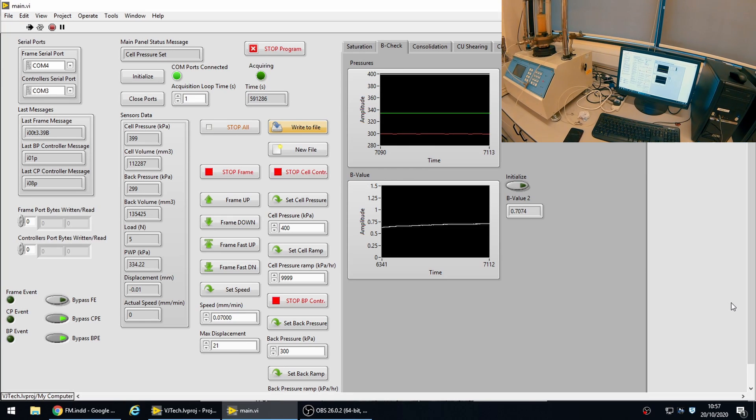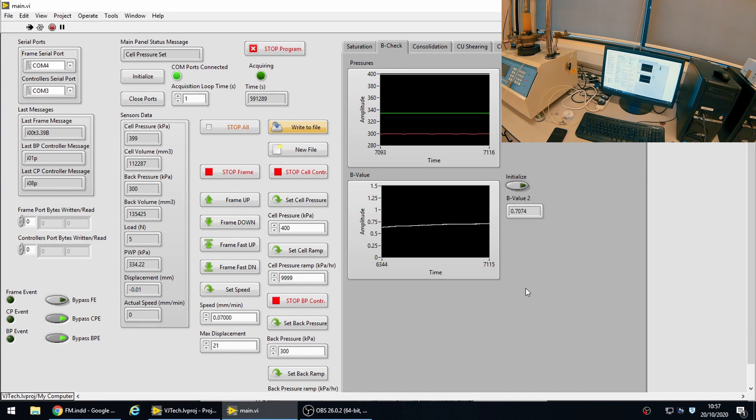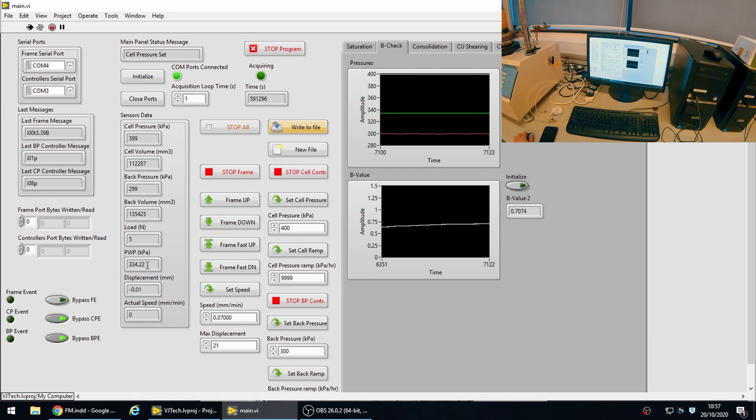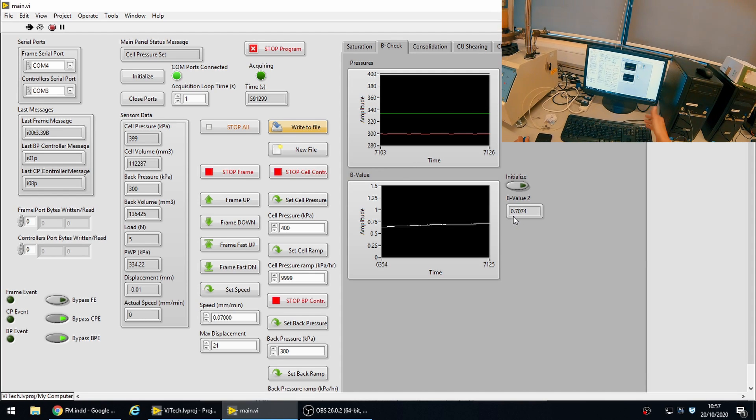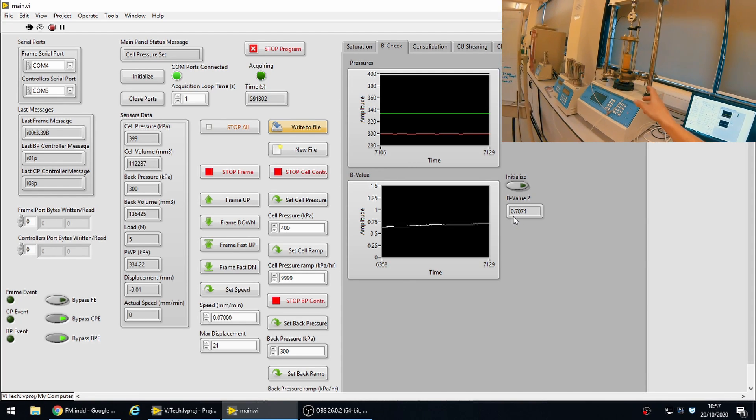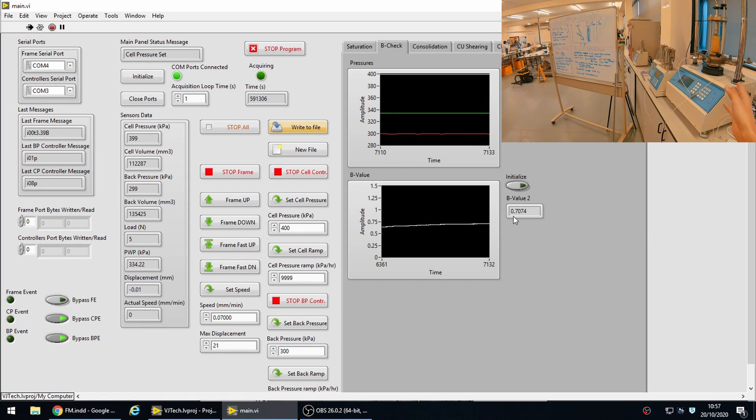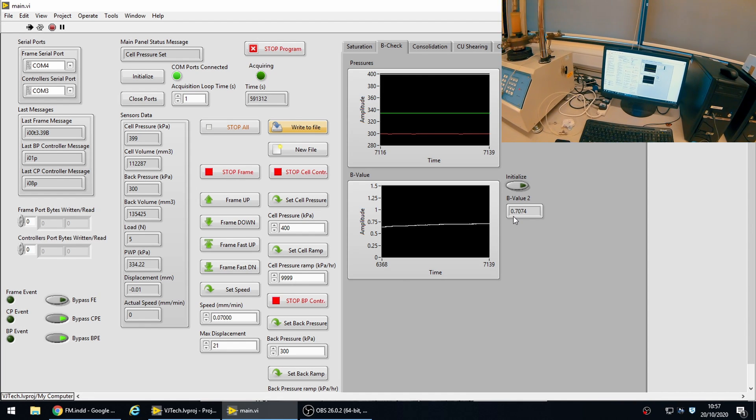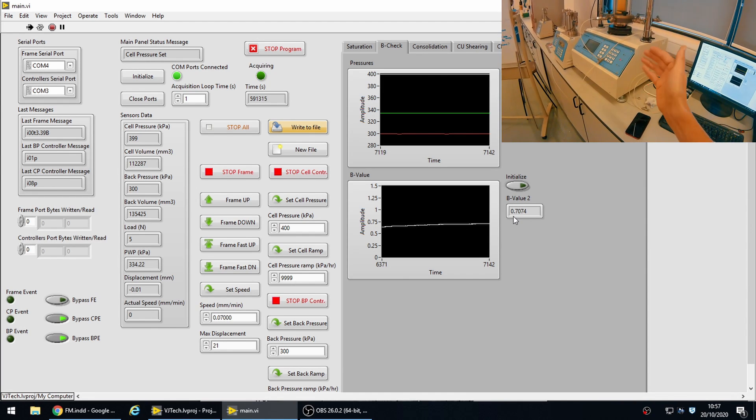And we're back here with 22 seconds to go on our 10-minute timer. We can look at our B check and find out what level of saturation our samples are. If we look at our application here, we have a pore pressure of 334, which corresponds to a B value of 0.7. So for our purposes, especially considering we have air in the feed lines as well that is being compressed, we have at least a saturation of above 95%.